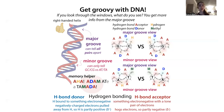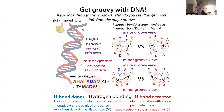In the major groove you can tell them all apart. In the minor groove you see a hydrogen bond pattern of acceptor-donor-acceptor for both AT and TA — that's why you can't distinguish them there. In the major groove you see acceptor-acceptor-donor versus hydrogen-hydrogen-donor-acceptor-acceptor, so you can tell them apart. For the AT versus TA distinction, I used the mnemonic: 'Aha! Adam ate a tomato' — AHA for the minor groove, AT for 'Adam,' and TA for 'a tomato.'